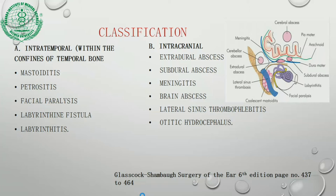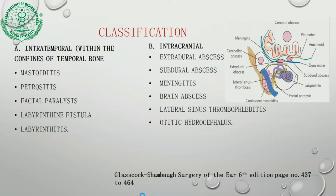Classification of complications is in two subgroups: intratemporal, meaning within the confines of the temporal bone, and intracranial. Intratemporal complications are mastoiditis, petrositis, facial paralysis, labyrinthine fistula, and labyrinthitis. Intracranial complications are extradural abscess, subdural abscess, meningitis, brain abscess, lateral sinus thrombophlebitis, and otitic hydrocephalus.